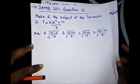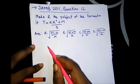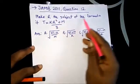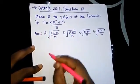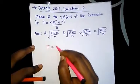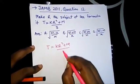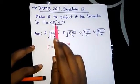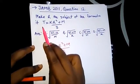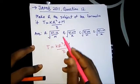Our next question is from JAMB 2011 question 12. It says: make r the subject of the formula if t = (kr² + m) / 3. Making r the subject means we have to isolate r on the left-hand side using the right operations.